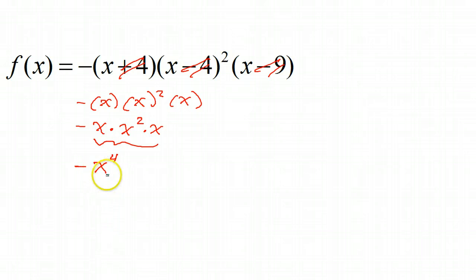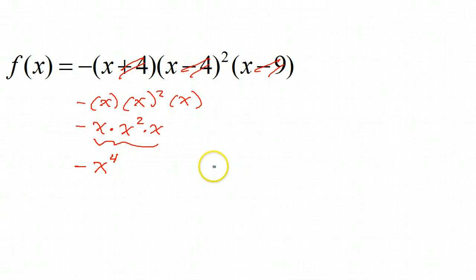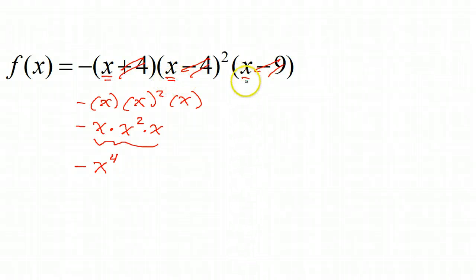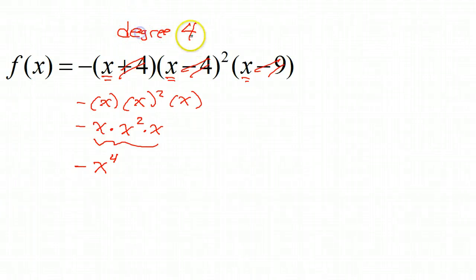So I am dealing with a quartic. I took out the constant, so this is going to be a more complicated polynomial. But just counting the x's like this — one of these, two of these, one of these — a total of four — that tells me the degree. And that will help me with the end behavior.